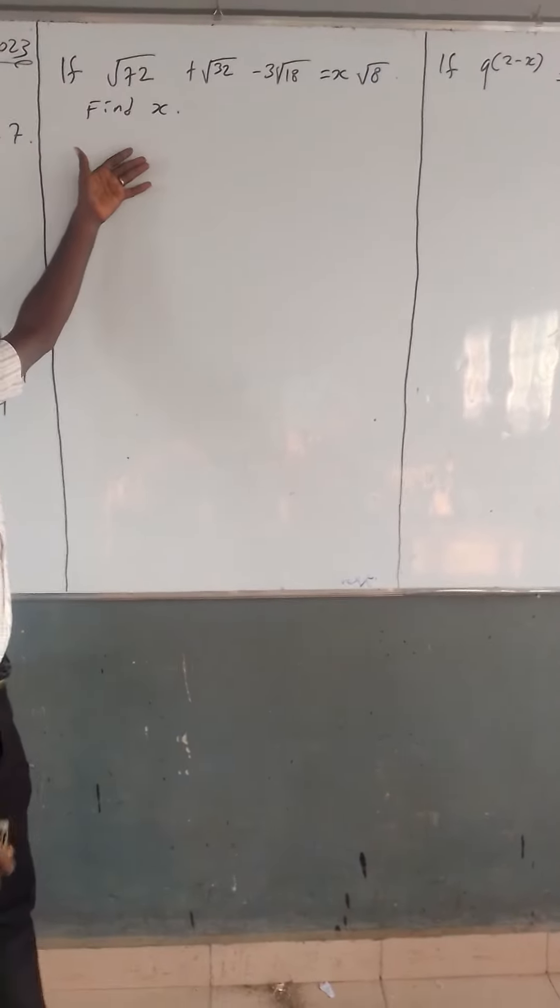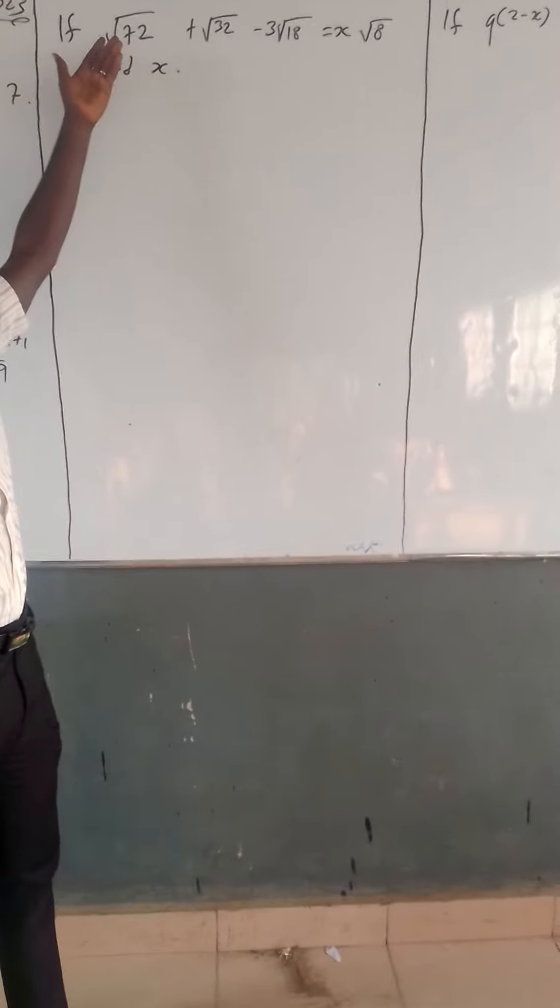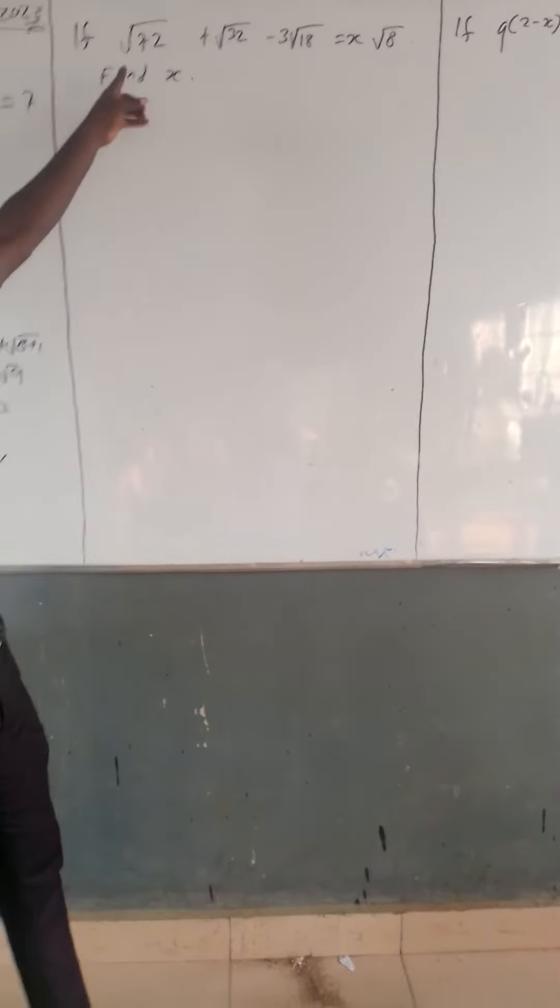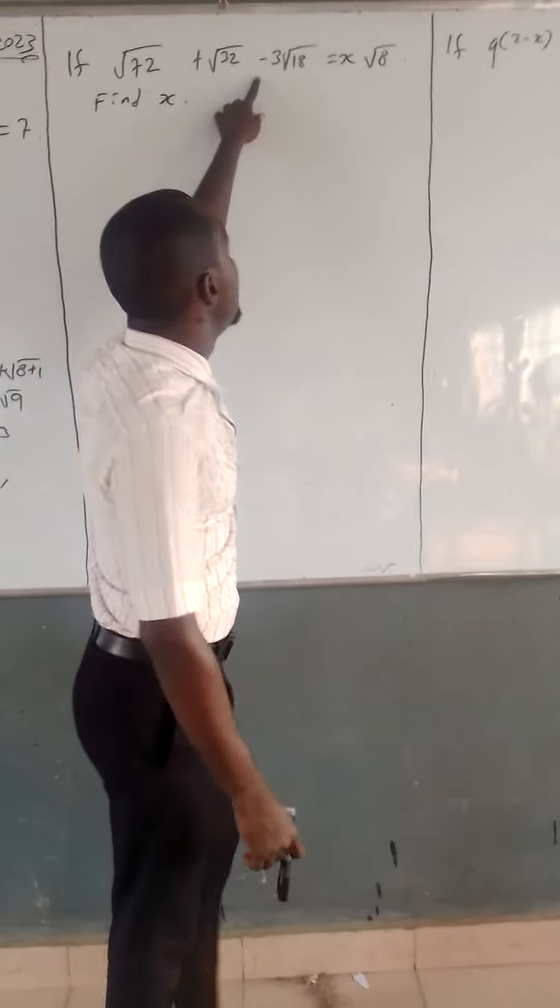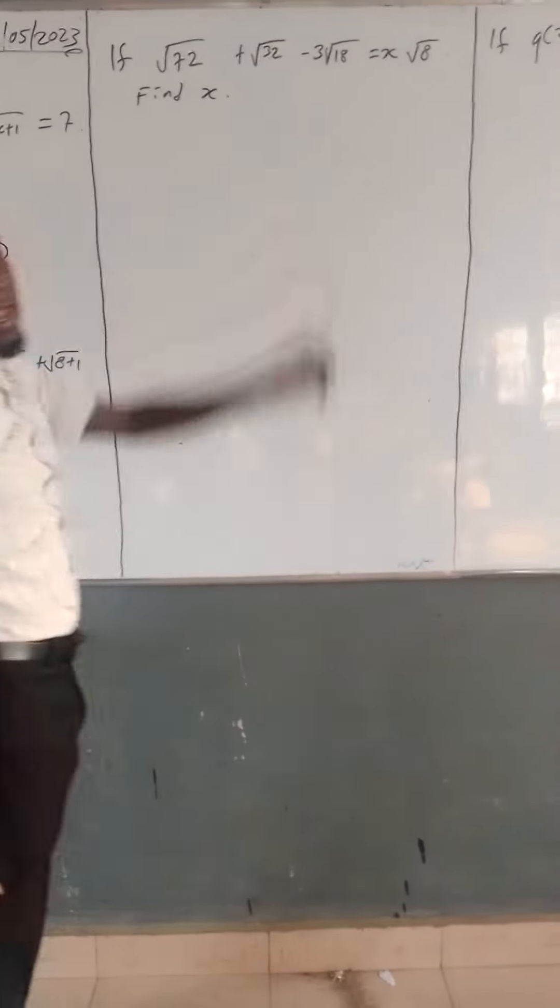X in this particular equation is a combination of all equations and all of the sorts. We have a new term. If square root of 72 plus square root of 32 minus 3 root of 18 equals x times square root of 8, find x.